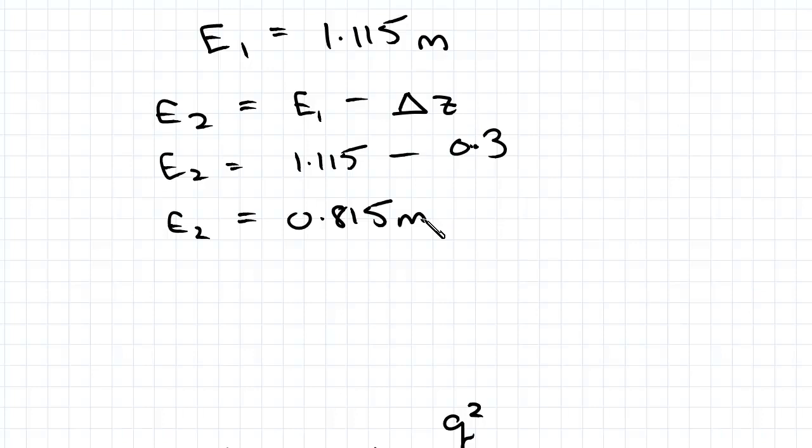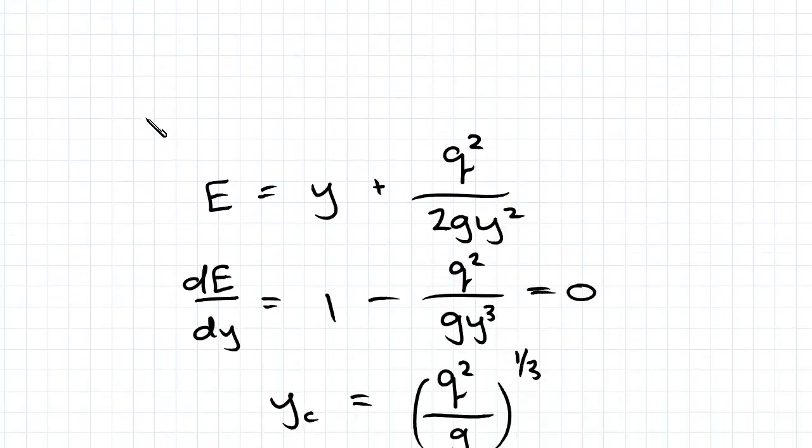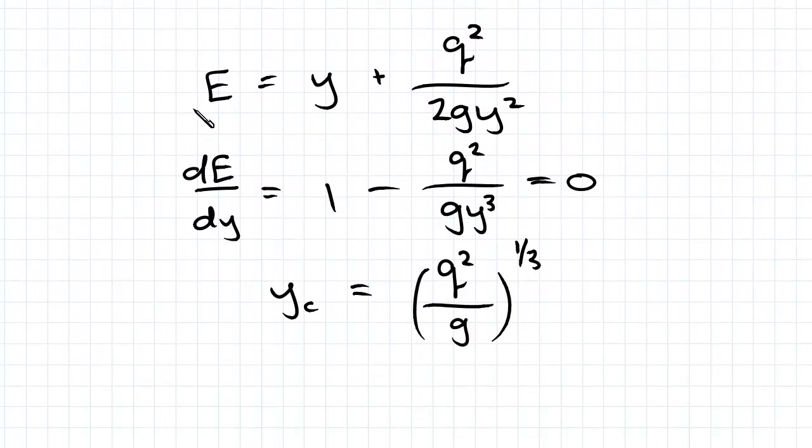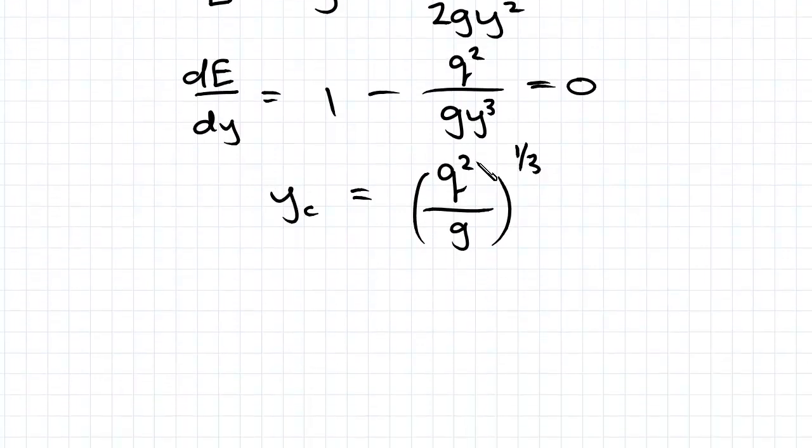So first we need to find yc which will enable us to find ec. I've been over the derivation of yc before so I won't go through it in depth again but here it is anyway. So we're taking the derivative equal to 0, find our yc and sub in for little q which was 1.5.